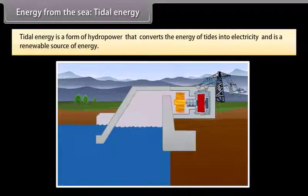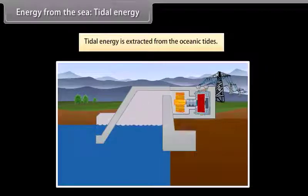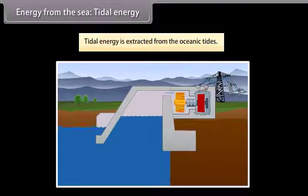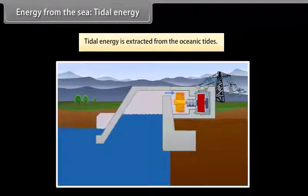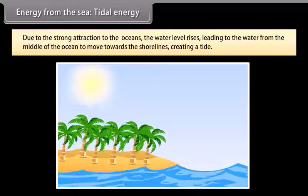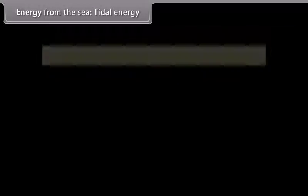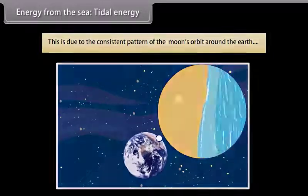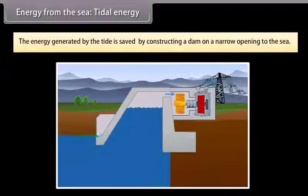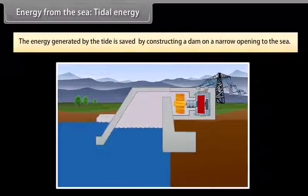Energy from the sea: Tidal energy. Tidal energy is a form of hydropower that converts the energy of tides into electricity. This is a renewable source of energy. Tidal energy is extracted from the oceanic tides. Tidal forces are periodic variations in gravitational attraction exerted by the moon. This force creates motions or currents in the oceans. Due to the strong attraction to the oceans, the water level rises. This leads to the water from the middle of the ocean to move towards the shorelines, creating a tide. This is an unfailing occurrence due to the consistent pattern of the moon's orbit around the earth. The energy generated by the tide is saved by constructing a dam on a narrow opening to the sea. A turbine is then fixed at the opening of the dam that converts this tidal energy to electricity.